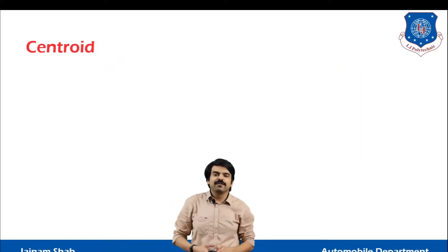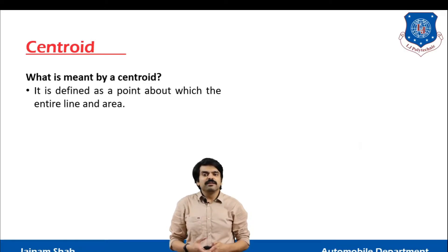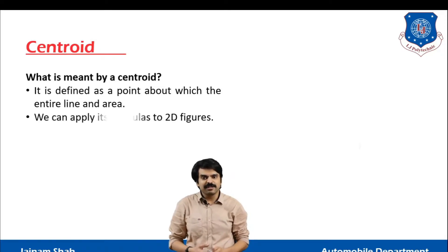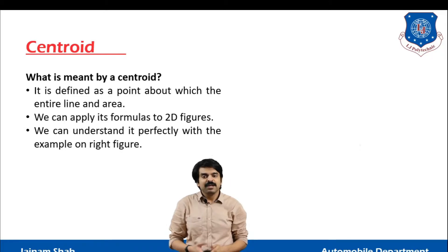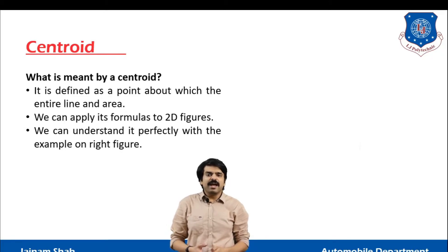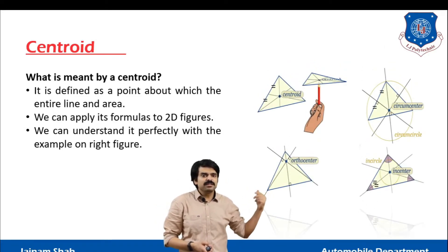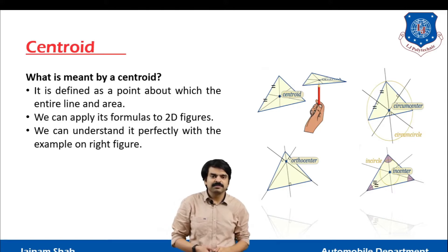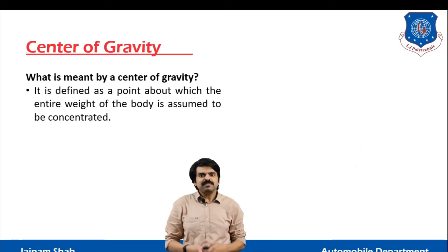Let's start with centroid. What is centroid? It is defined as a point about which the entire line and area is concentrated. We can apply its formula to two-dimensional figures. We can understand it perfectly with the example on the figure given on the right side — as you can see, a person is balancing the 2D figure at the point of the fan.